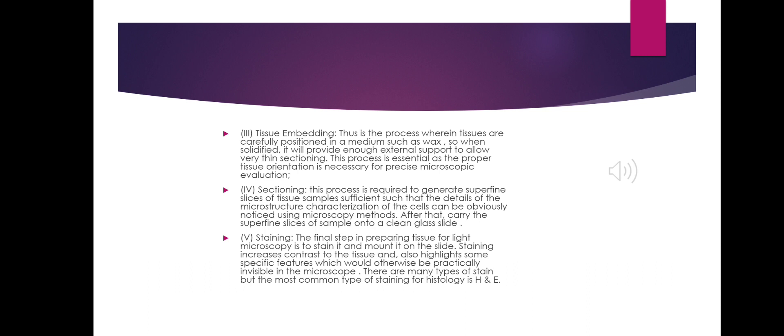Step 5: Staining. The final step in preparing tissue for light microscopy is to stain it and mount it on the slides. Staining increases contrast to the tissue and also highlights specific features which would otherwise be practically invisible under the microscope. There are many types of stain, but the most common type of staining for histology is H&E.